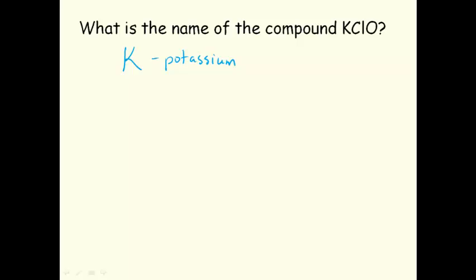We know that Cl is chlorine, and we know that O is oxygen. But we should also recognize this as a polyatomic ion.